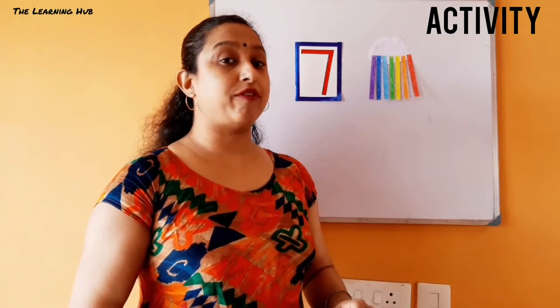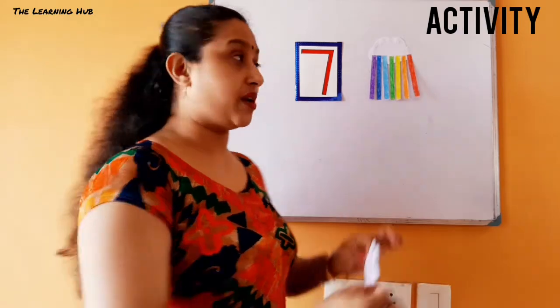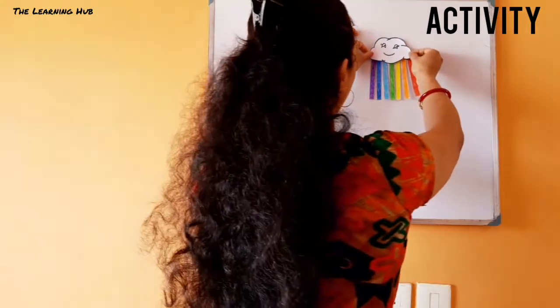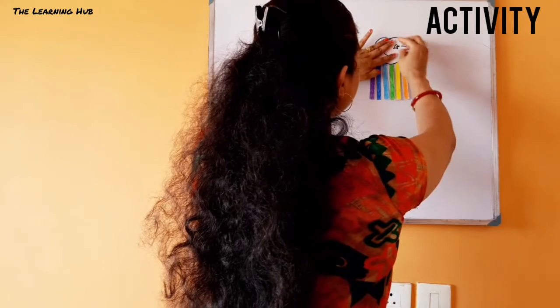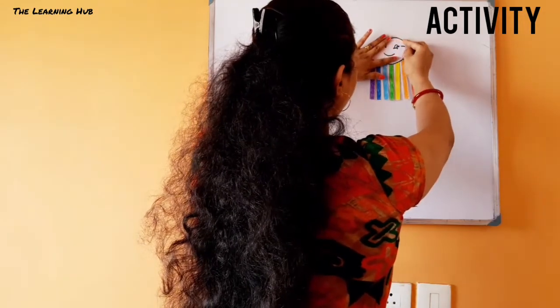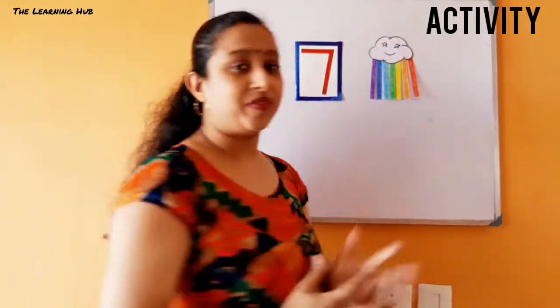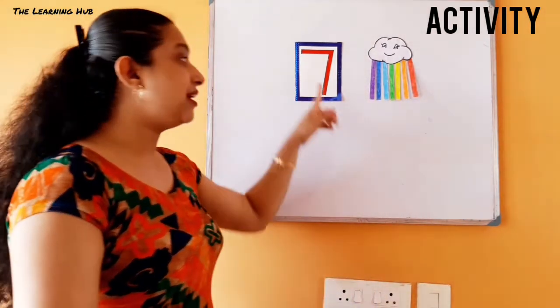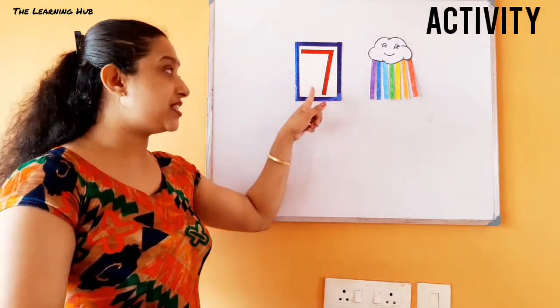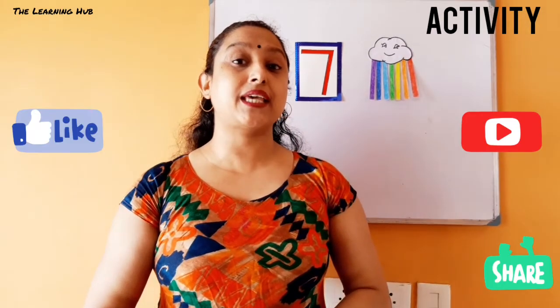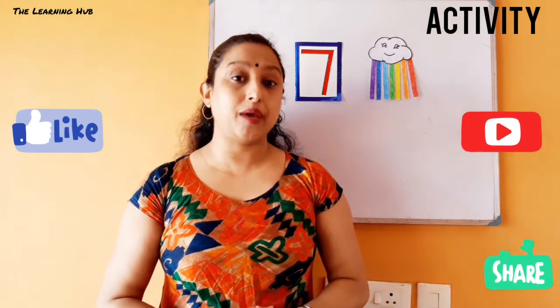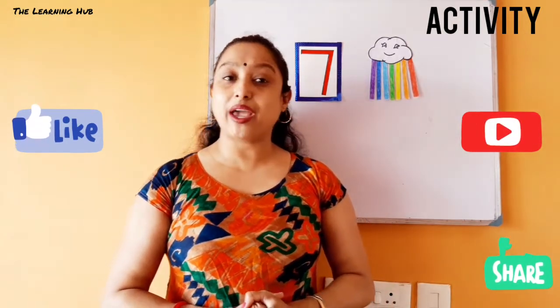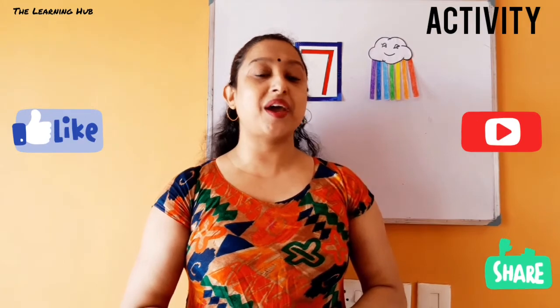Now we have to paste one more cloud cutout on top like this. Our rainbow activity is ready! So children, today we have learned which number? Number seven! What is this number? Number seven! I hope you had a great time with math. Children, please keep learning and keep practicing. See you again in the next video - till then, take care, bye bye!